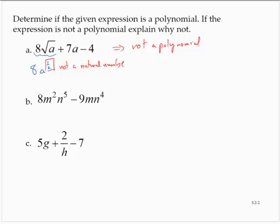Looking at the next expression: 8m to the negative 2nd times n to the 5th, minus 9mn to the 4th. Let's check the exponents: we have m to the negative 2nd — negative 2 is not a natural number — but 5 is a natural number, m to the 1st where 1 is a natural number, and 4 is a natural number.